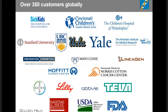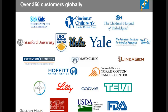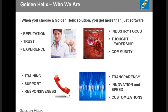Golden Helix serves over 350 organizations worldwide, including top-tier research organizations like Stanford and SickKids Hospital in Toronto, clinical labs like the Mayo Clinic, major government institutions like the National Cancer Institute and the FDA, and pharmaceutical companies like Teva and Bayer. All of these customers lead to thousands of users who trust our software. When you buy a product from Golden Helix, you're getting our reputation for quality products, excellent customer service, and domain expertise.